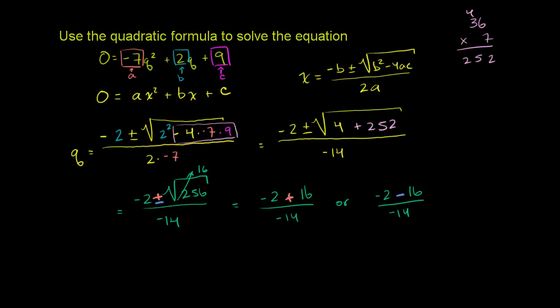Now we evaluate these two numbers. Negative 2 plus 16 is 14, divided by negative 14 is negative 1. So q could equal negative 1. Or negative 2 minus 16 is negative 18, divided by negative 14 equals 18 over 14. The negatives cancel out.